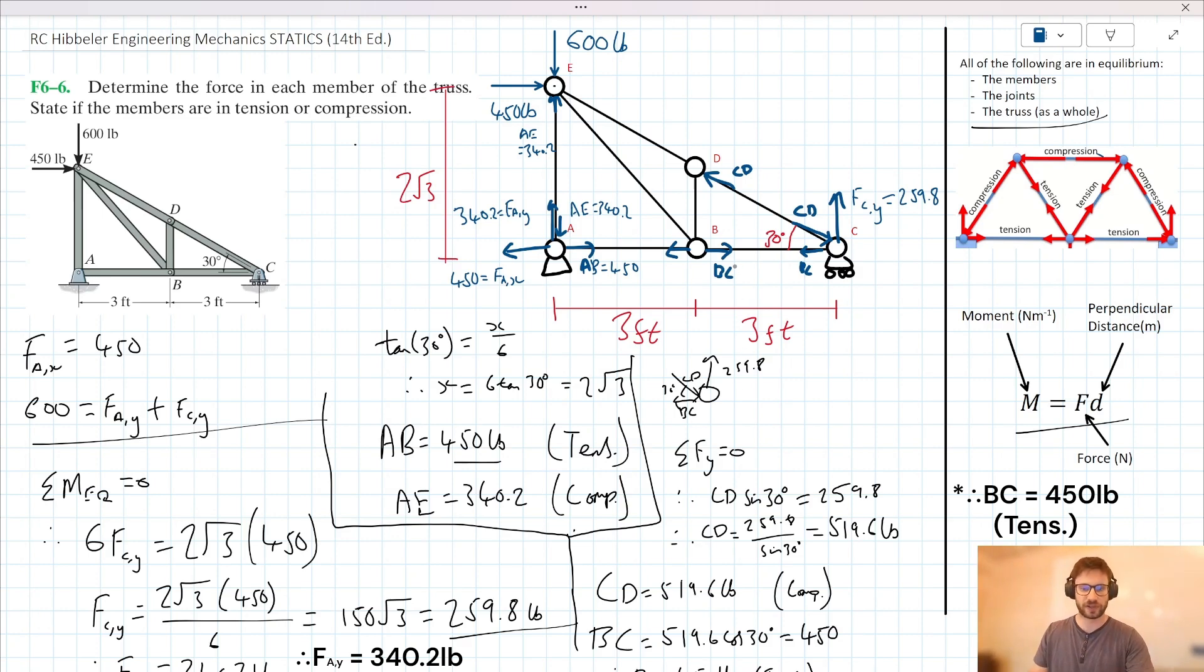So BC takes a value of 450. And we know that BC here is in tension. Let's just label things up on our diagram here. So we have AB equal to 450. So we have 450 acting there as well. BC we've just discovered is also 450. So we know that CD is equal to 519.6. So we know that CD is equal to 519.6. So we've noted here, we've solved for joint C.